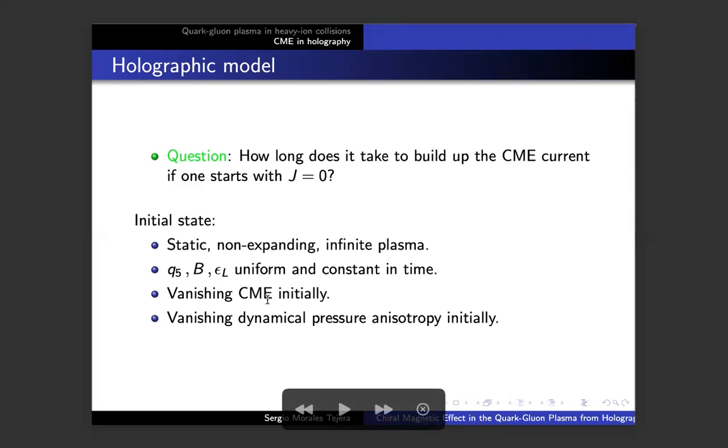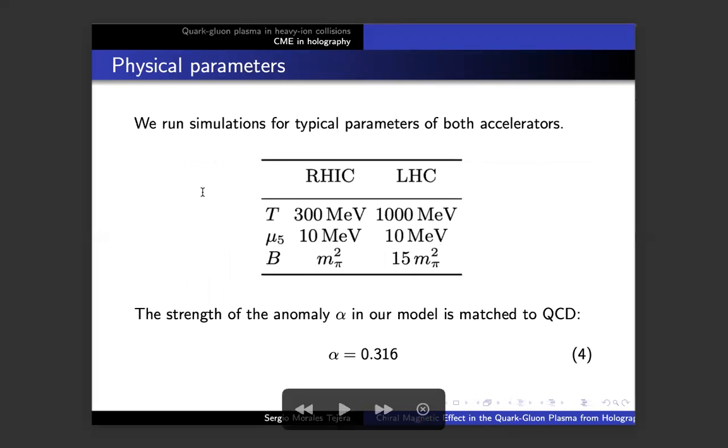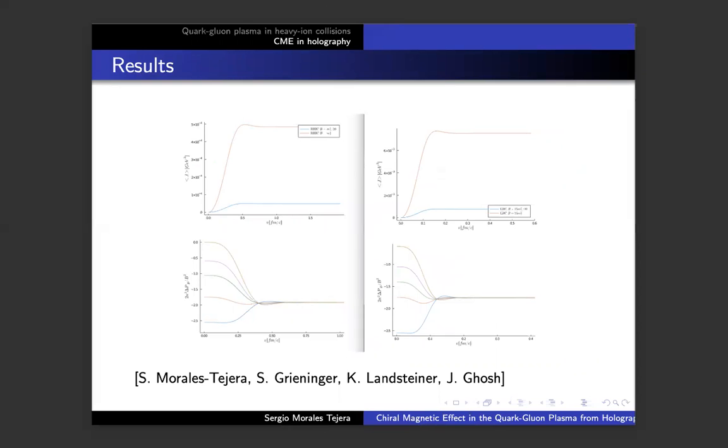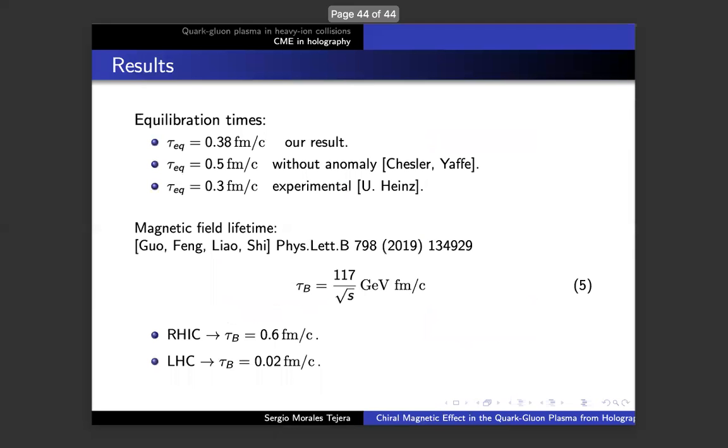We simulate for typical parameters of both accelerators. We take these typical values for temperatures, chemical potentials, and magnetic field. The value of the strength of the anomaly in holography is matched to QCD, and we get this value. Hence, we run the simulations. Here we only have to focus on the orange upper curves. On the left, I have the result for RHIC, and on the right, I have the result for LHC. You will see the time it takes to build up. For RHIC, we get that at 0.5 fermis over c you should see already the CME, whereas at LHC it's faster—you find it at 0.1.